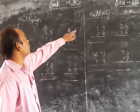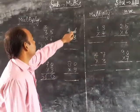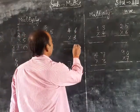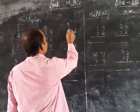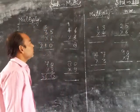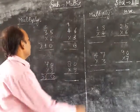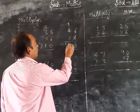Next, 46 x 3. 3 x 6 is 18, write 8, carry 1. 3 x 4 is 12, plus 1 is 13. Answer: 138.